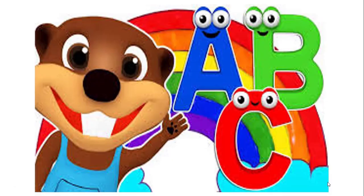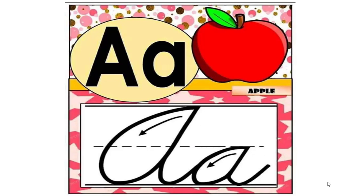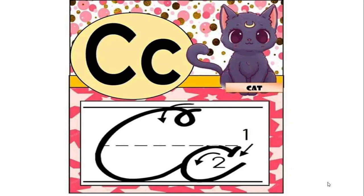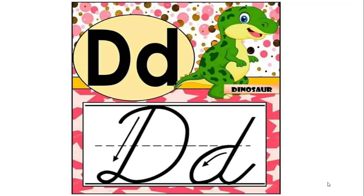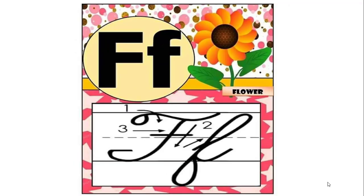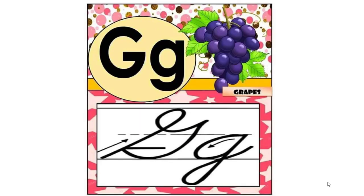Let's learn the alphabet. A, Apple. B, Bar. C, Cat. D, Dinosaur. E, Elephant. F, Flower. G, Graves.